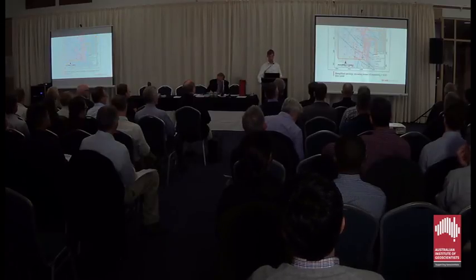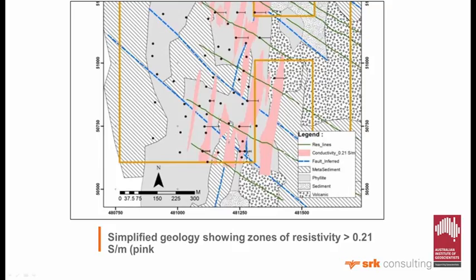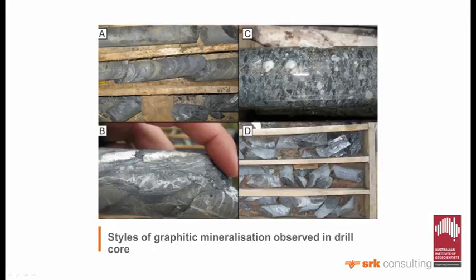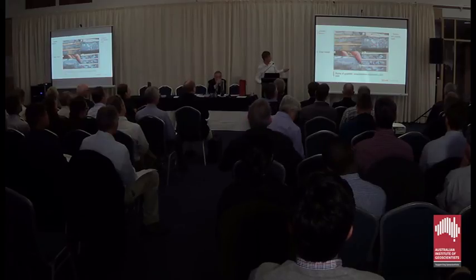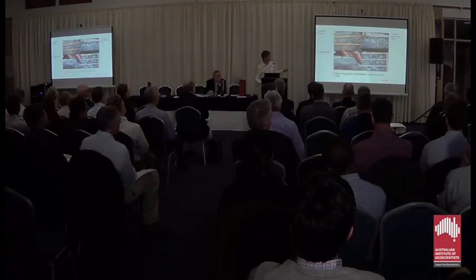This shows the same anomalies superimposed onto the geology. The main grey area is basically phyllites, and there's also some limestone which is not shown on this map, along with quite a bit of volcanic sequences. These are some of the styles of graphitic mineralisation observed in the drill core. You can see up here we have some banded stratiform type, and here we have some shear-hosted mineralisation. We also have some fault brecciation with graphitic flakes embedded in breccias and agglomerates.